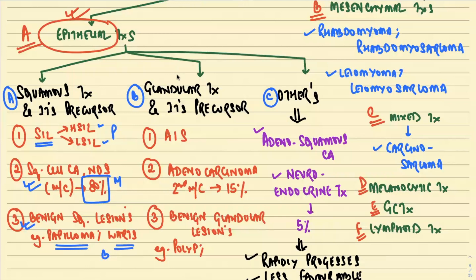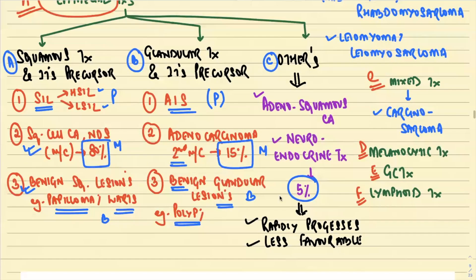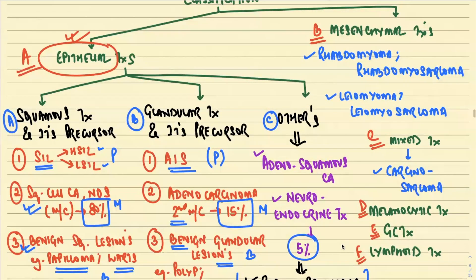The second important epithelial tumor category is glandular tumors and their precursors. The precursor lesion is adenocarcinoma in situ (AIS). Among malignant glandular lesions, adenocarcinoma is the second most common cervical carcinoma. Benign glandular lesions include, for example, endocervical polyp. Lastly, uncommon tumors — adenosquamous carcinoma and neuroendocrine tumors — contribute just five percent of all cervical epithelial tumors, and they rapidly progress with a far less favorable prognosis.